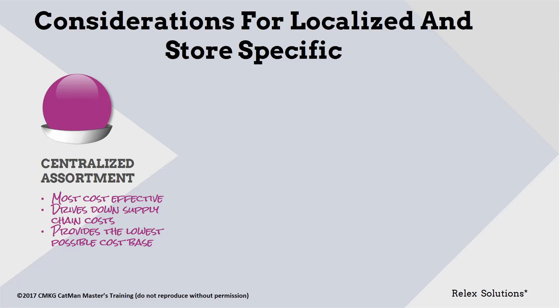Offering a central assortment, modified potentially only by store size to increase assortment variety within larger stores, is the most cost-effective mode of operating for a retailer.